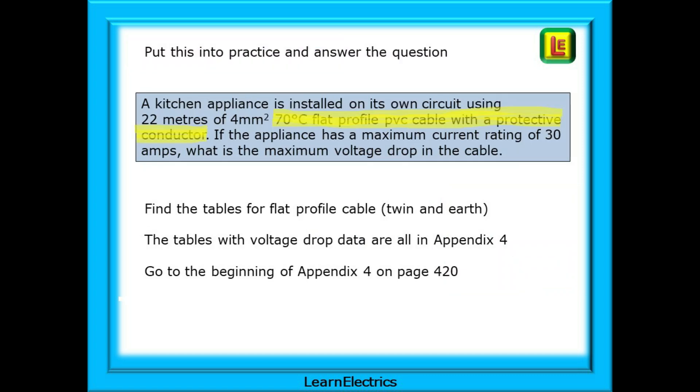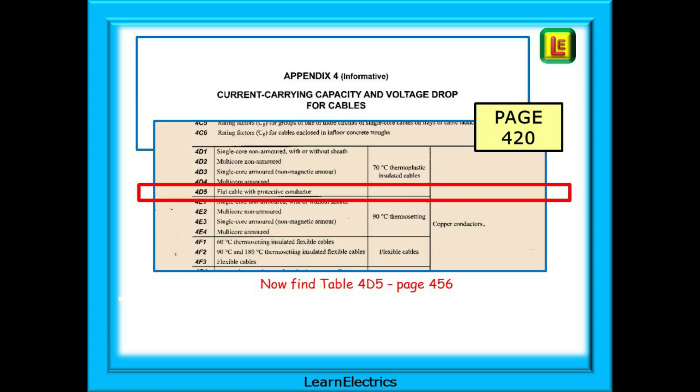Let's put this into practice and answer the question. First of all find the tables for flat profile cable or as we know it twin and earth. The tables with voltage drop data are all in appendix 4 and to find these we need to go to the beginning of appendix 4 on page 420. This is page 420 and the bottom half of the page has a list of different cable types. They all have their own individual tables and we are looking for flat cable with a protective conductor. Table 4D5 is the table that we need but the book does not tell us a page number. It's on page 456 so let's go there.